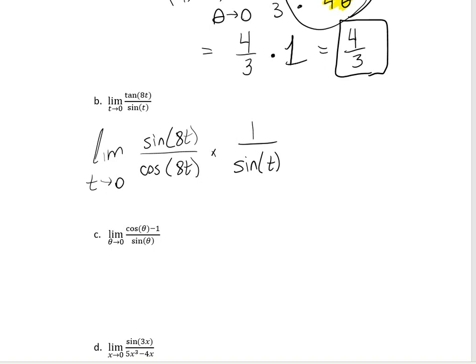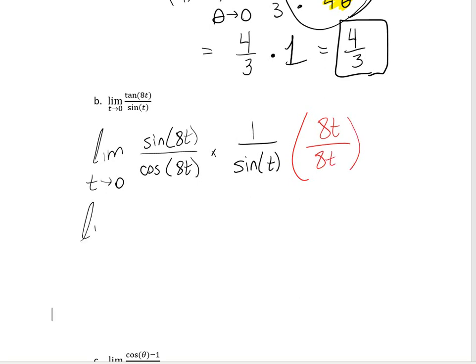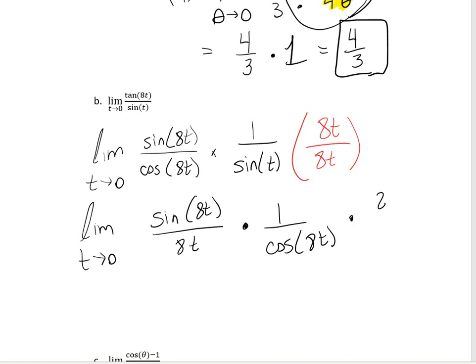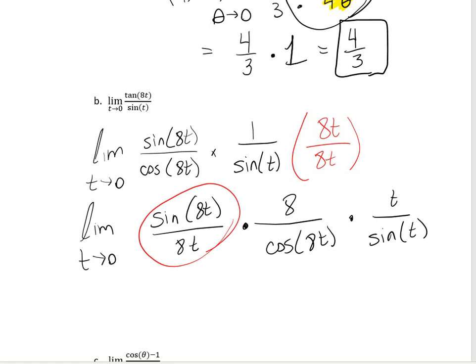What I'm going to do is multiply by 8t divided by 8t. That gives me the limit as t approaches 0. I can reorganize the multiplication, so that becomes sine of 8t divided by 8t, times 1 over cosine of 8t, times 8t divided by sine of t. The sine of 8t over 8t piece goes to 1 because the inside and the bottom are both going to 0 at the exact same rate.